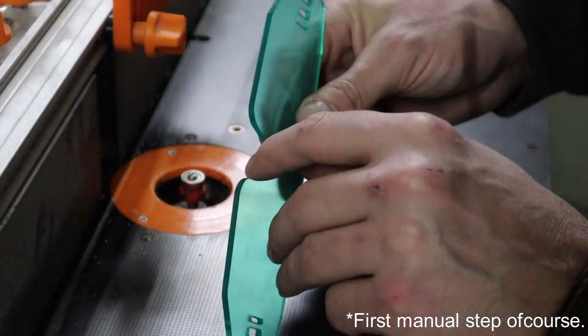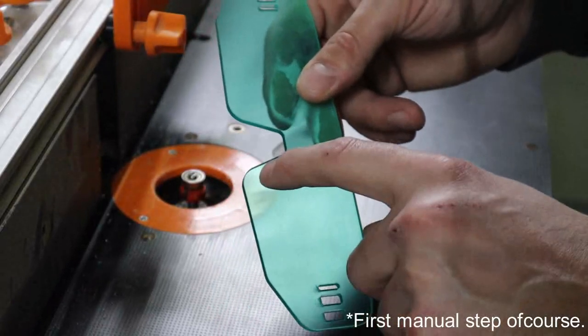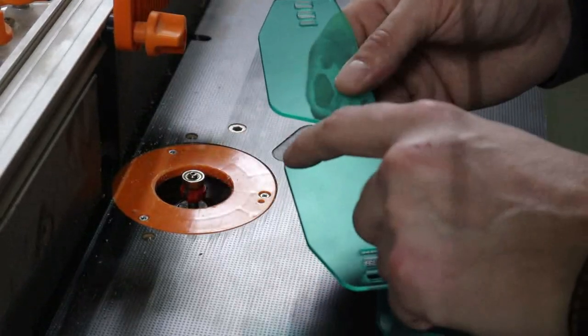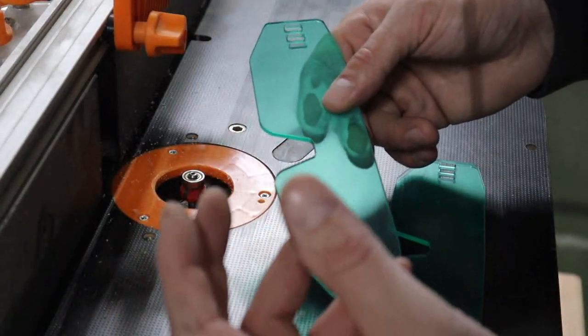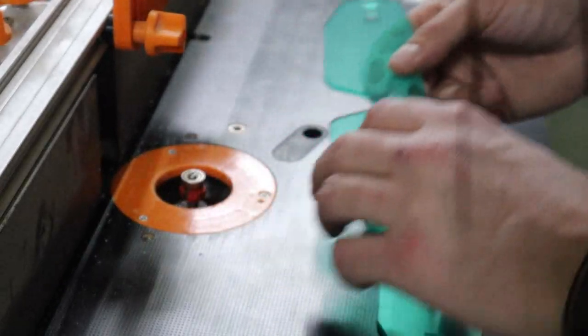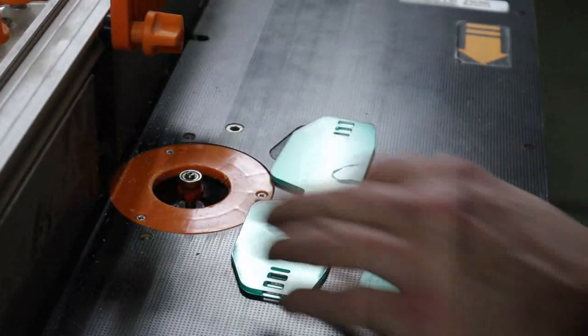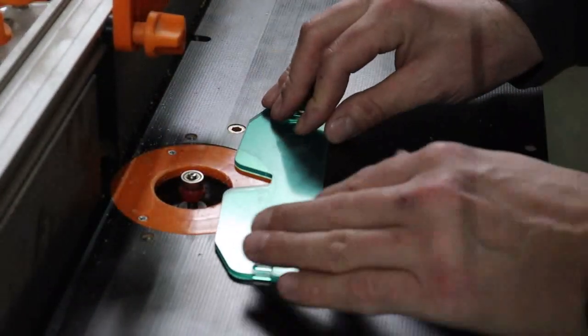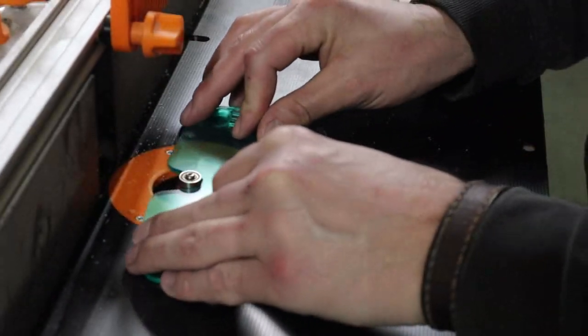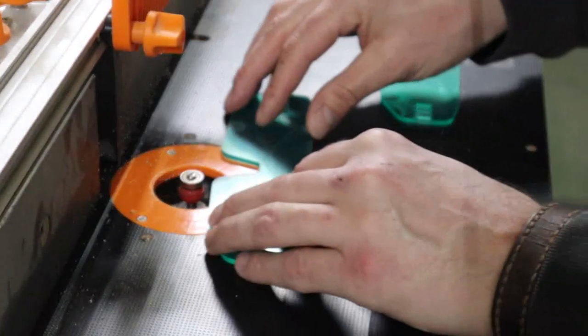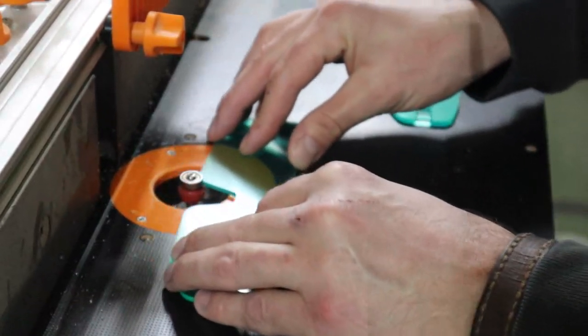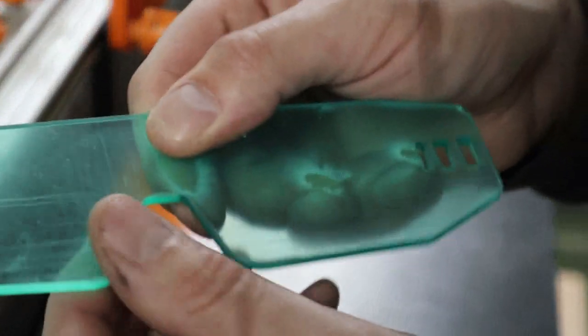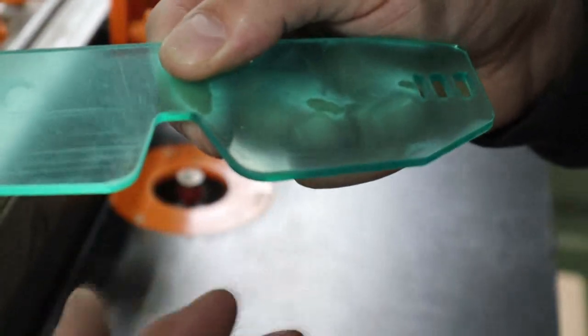The first step is using a table router to deburr this sharp edge. We're going to make it round because it will touch the face mask, and if it's too sharp it can potentially damage the face mask and compromise the person that's wearing it. We use a simple routing table, low RPM—that's the most important thing, otherwise the plastic will start to melt. Now you have a nice clean round edge along the nose piece, and this will protect the mask.